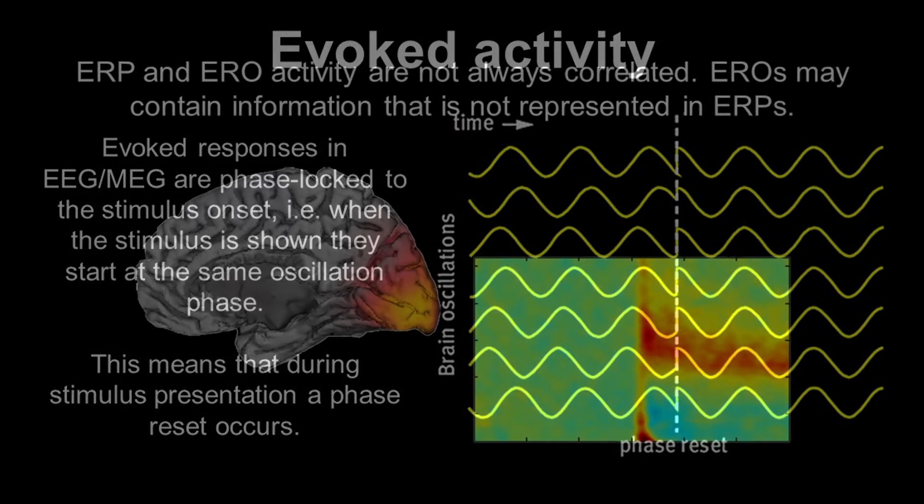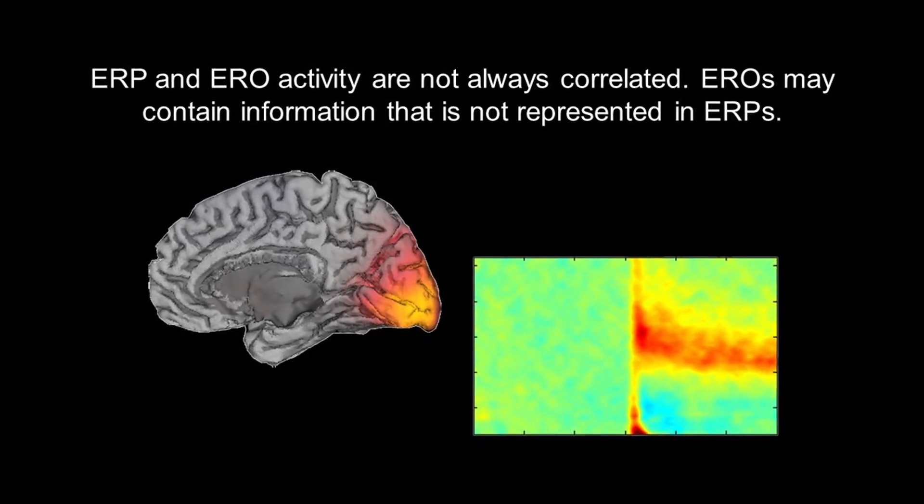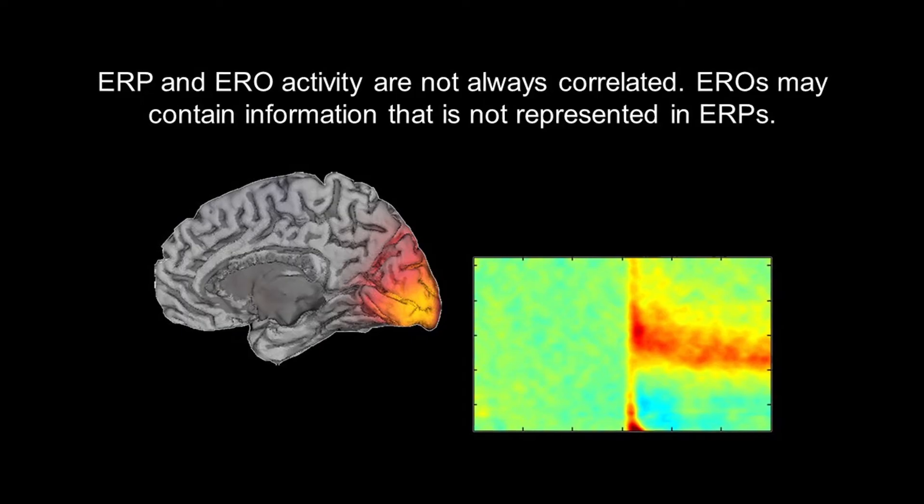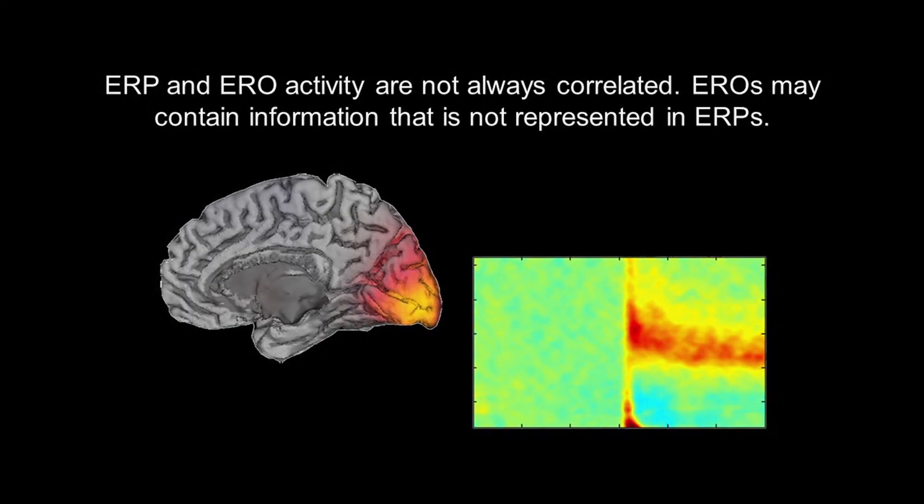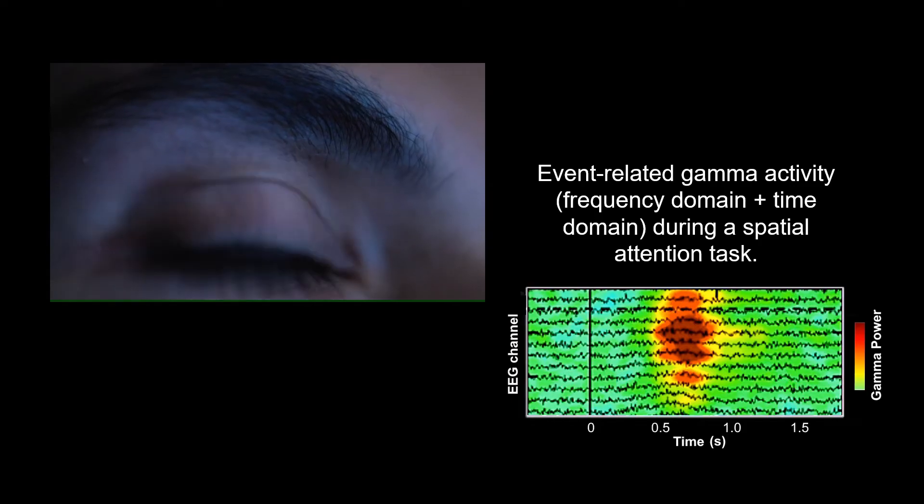However, in other cases, event-related oscillations contain information about brain processes that are not clearly observed in ERPs. For example, in a spatial attention task, where we have to focus on a specific stimulus, there is an increase in gamma activity when a stimulus is presented.